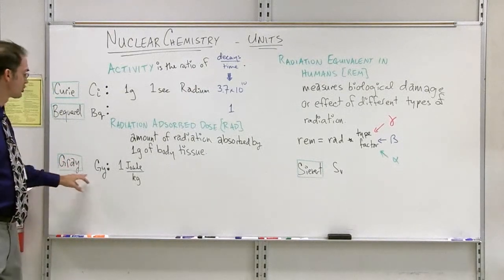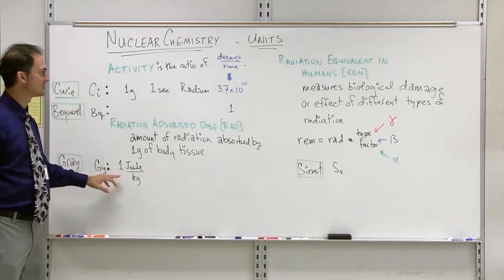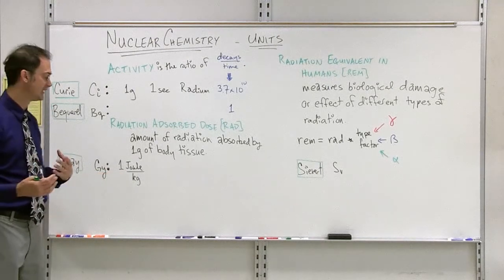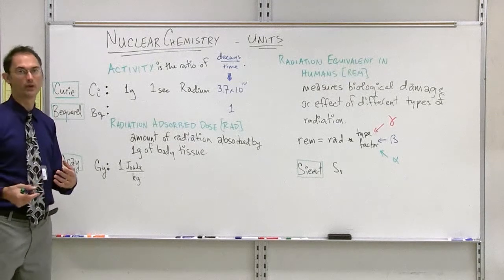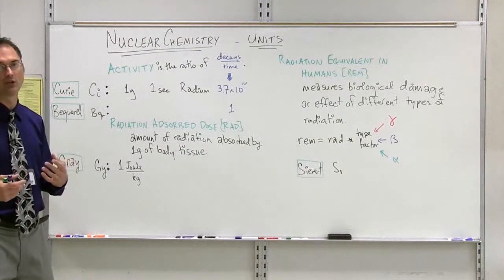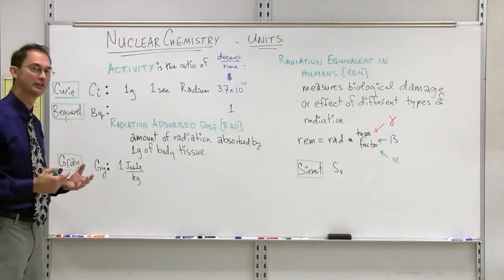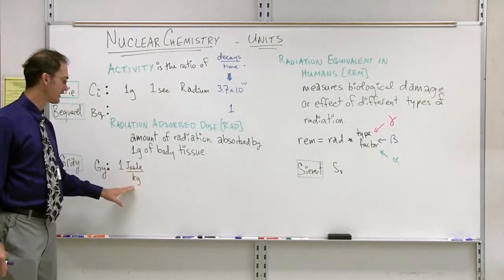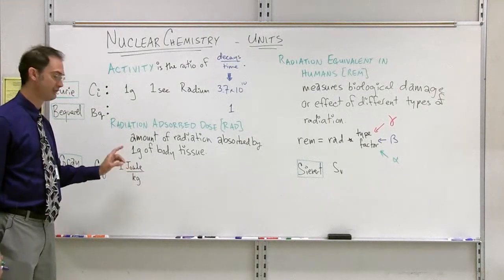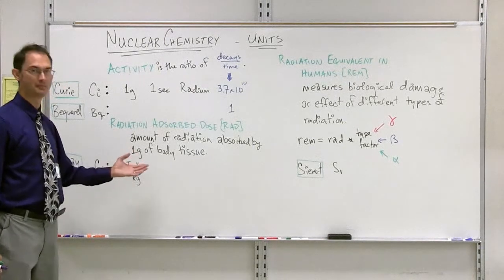There is one unit, and that is the gray. The gray, in this case, doesn't have to do with the number of decays over time. It has rather to do with the amount of energy. In chemistry, we often study the energy unit of calorie. In this case, we will deal with the unit of the joule. A gray is one joule over kilogram, but it's the amount of joules that are, in fact, absorbed by the tissue.